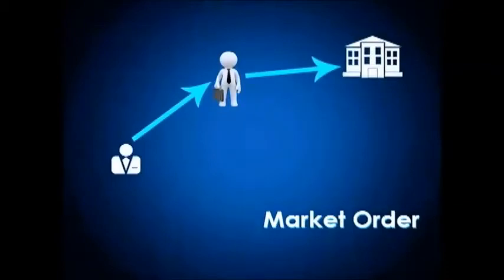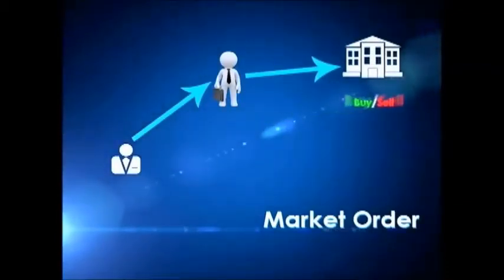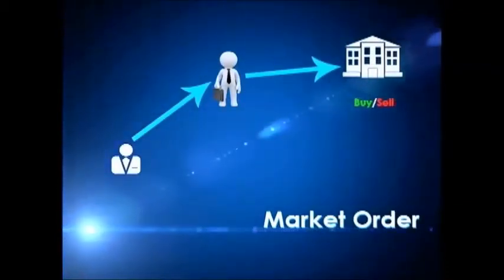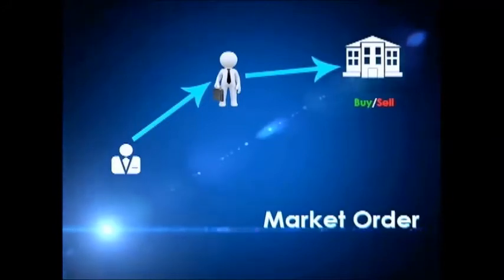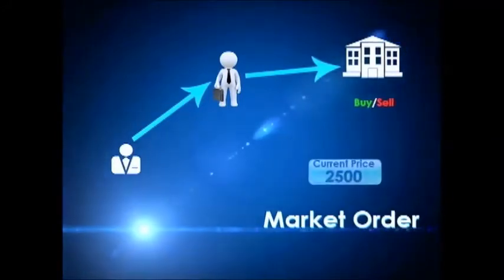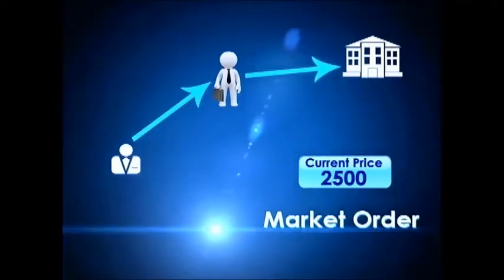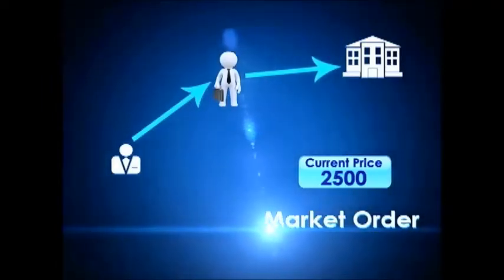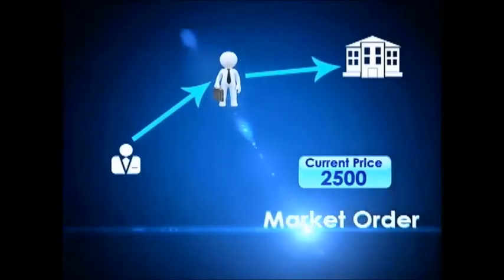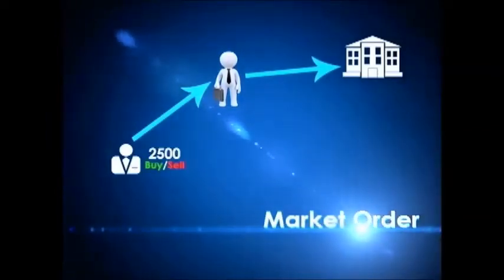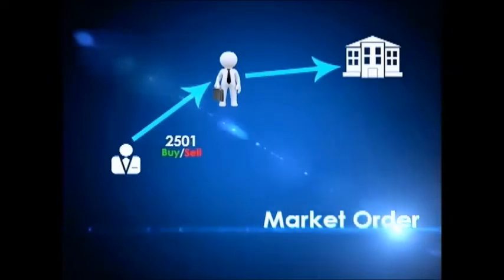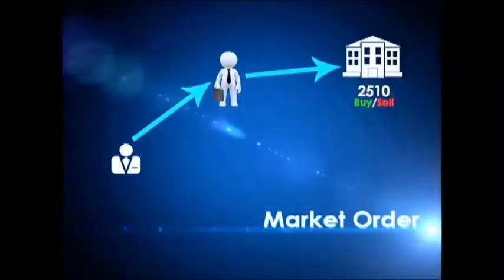A market order is when you put in a buy or a sell order and it gets executed immediately. Your order goes through immediately at the best available current price. So you don't have to mention the price at which you are bidding — it's an instant go through. The risk of using this option is that the price that you last saw and decided to put in your order and the price at which the order actually goes through might vary.